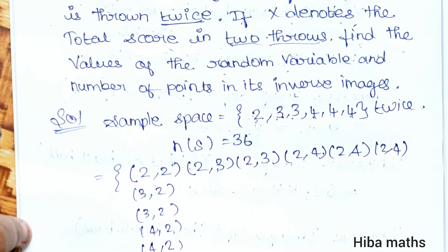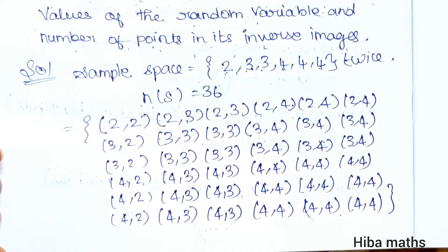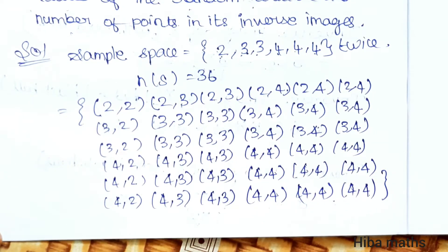Let's complete the sample space. We have all combinations for two throws.